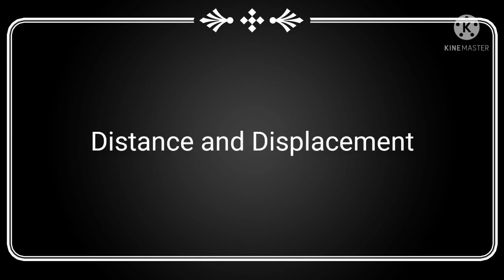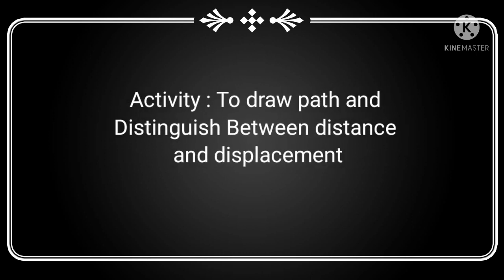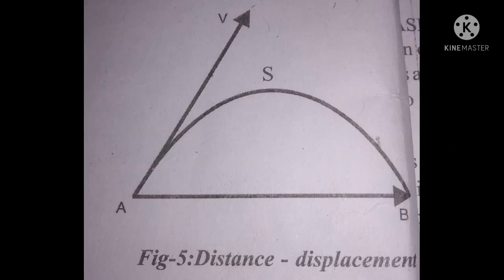Next: distance and displacement. Let us discuss an activity to draw the path and distinguish between distance and displacement. Take a ball and throw it into the air at some angle to the horizontal. Observe its path and draw it on paper. The figure shows the path taken by the ball. The path A to B via S gives the distance traveled by the ball.